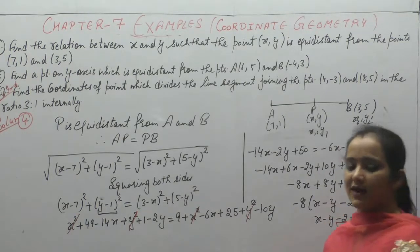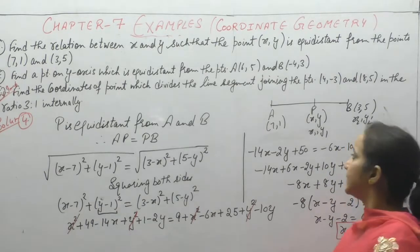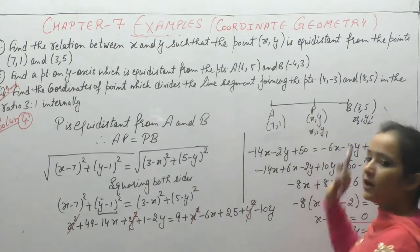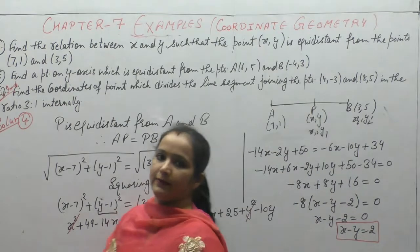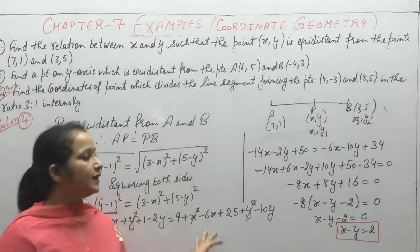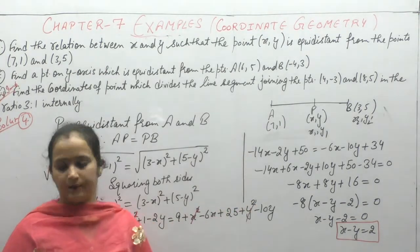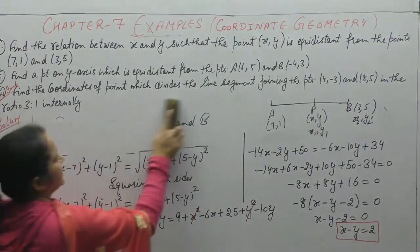So this is the relation between x and y: x - y = 2. Point is equidistant, so P's distance from A and B is equal. We squared both sides, opened equations, and solved. Now next question number 5.